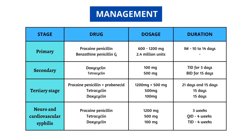Now let's look at the management of syphilis. Each stage is managed differently, but the main treatment involves penicillin group antibiotics. The primary stage is treated with procaine penicillin or benzathine penicillin G. The dosage and duration for each drug at each stage is compiled in a tabular column for easy understanding. You can write it down and revise it daily so you have a clear picture whenever you need it in exams or clinical practice.